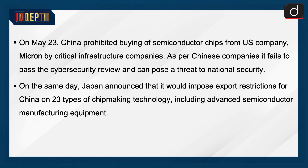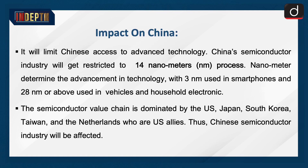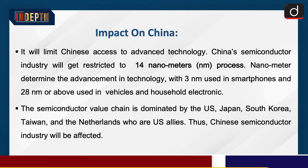On the same day, Japan announced that it would impose export restrictions on China for 23 types of chip-making technology, including advanced semiconductor manufacturing equipment. The semiconductor value chain is dominated by the US, Japan, South Korea, Taiwan, and the Netherlands, who are US allies.